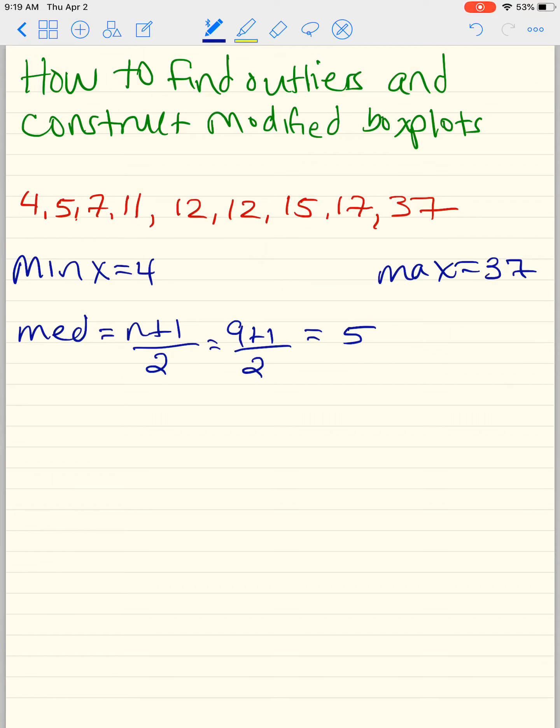So 9 plus 1 divided by 2 is our fifth number. The median is not 5, it's the fifth number: 1, 2, 3, 4, 5. That's our median. So our median is going to be 12.